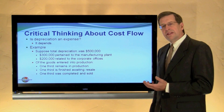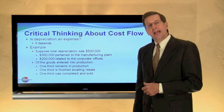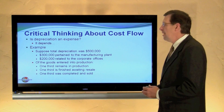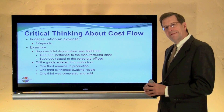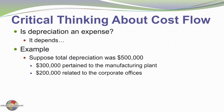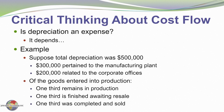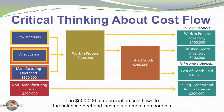Let's think critically about how this operates. One tends to think of depreciation as an expense, but is it always? Consider an example: assume total depreciation for the period is $500,000 — $300,000 relating to the manufacturing facilities and $200,000 relating to the corporate offices. Also, of the goods entered into production, one-third is still in production, one-third is finished awaiting sale, and one-third has been sold to customers. I'm showing in the manufacturing overhead block $300,000 of depreciation and in the non-manufacturing block $200,000 of depreciation.